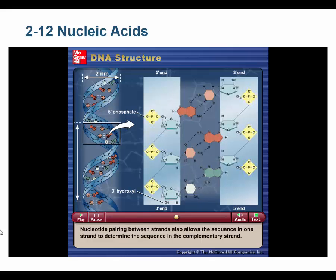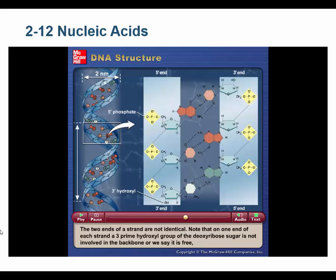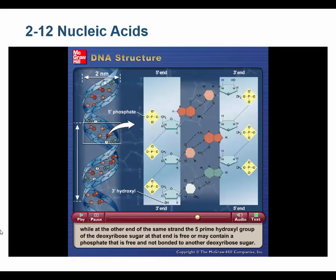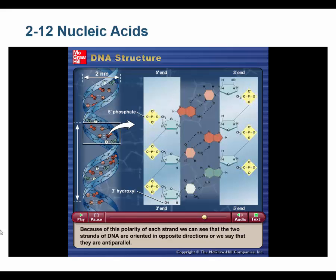Nucleotide pairing between strands allows the sequence in one strand to determine the sequence in the complementary strand. The two ends of a strand are not identical — one end has a free 3' hydroxyl group of the deoxyribose sugar, while the other end has a free 5' phosphate. This dissimilarity creates the ability to uniquely distinguish each end. Because of this polarity, the two strands of DNA are oriented in opposite directions — we say they are anti-parallel.